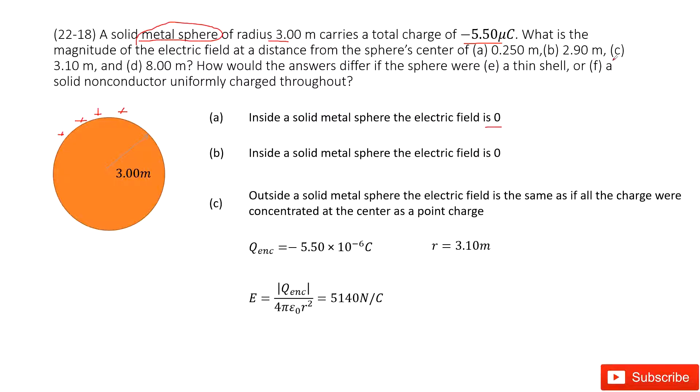At the region 2.9 meters, it is still inside this object, so the electric field is still zero because no charge is enclosed. The third one becomes 3.1 meters, which is just outside of this object.